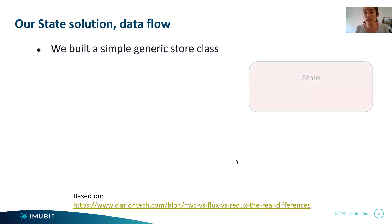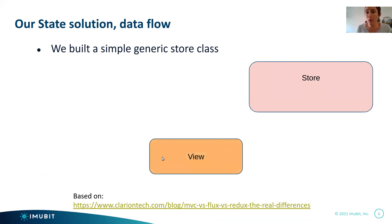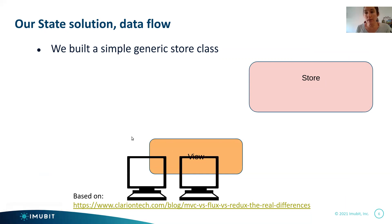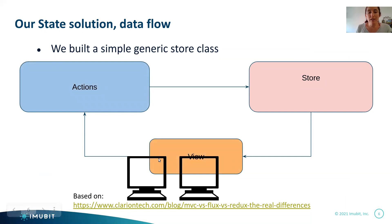The diagram I'll present is based on an article comparing a few state management concepts: MVC versus Flux versus Redux. We built a simple generic store class. The store class both holds the data we want shared between the various pages and also updates the pages when that data changes. We have two views: the courses view, which is the originating view because it originates the change to the courses list, and the schedule view, which is the observing view. The originating view triggers an action that changes the store, and the store updates the observing view.